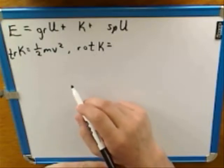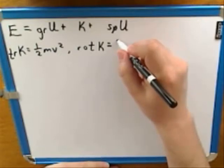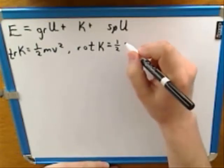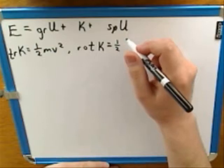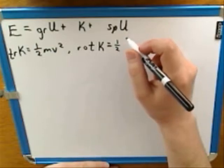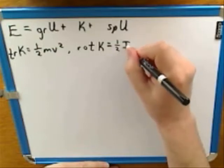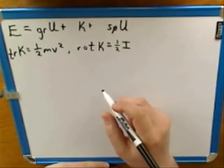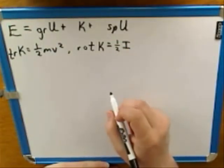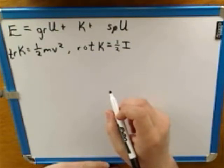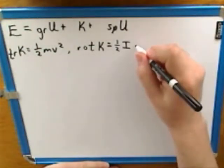Instead of mass, we would use moment of inertia. We'd start with one half, then instead of the mass we'd use the moment of inertia — symbol capital I. And then for velocity, we'd use omega — the angular velocity or rotational velocity.